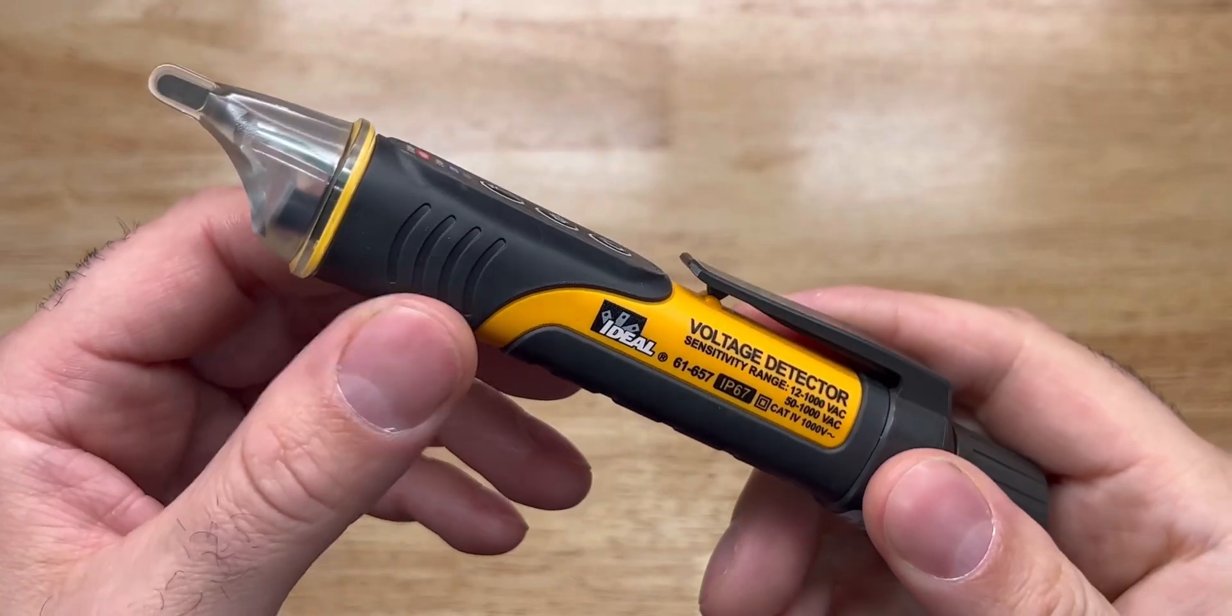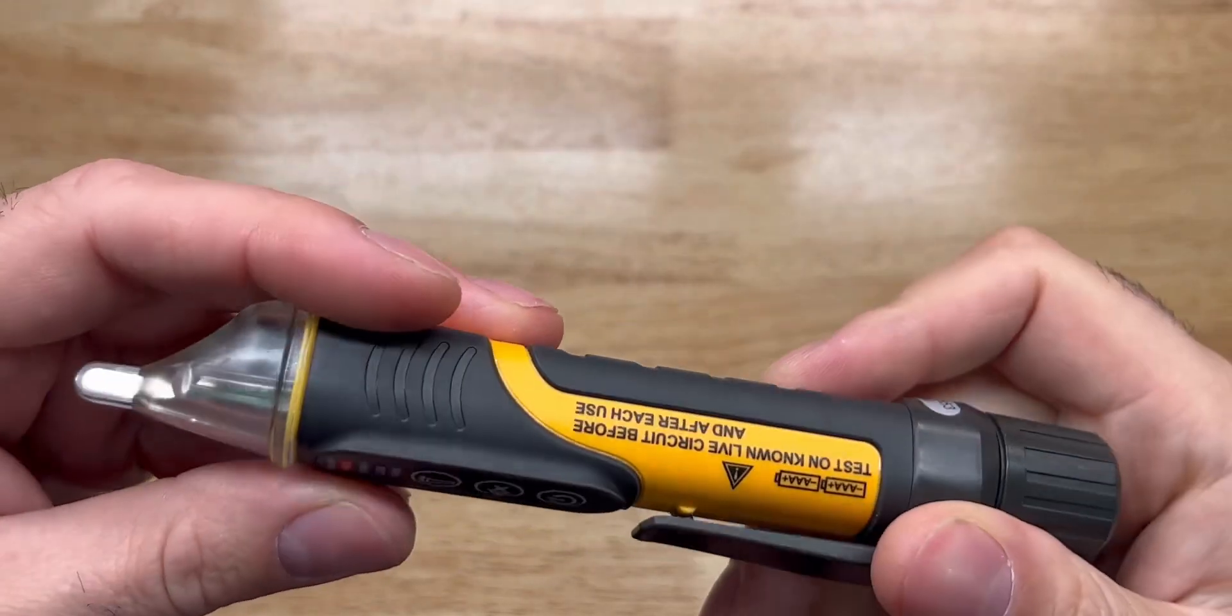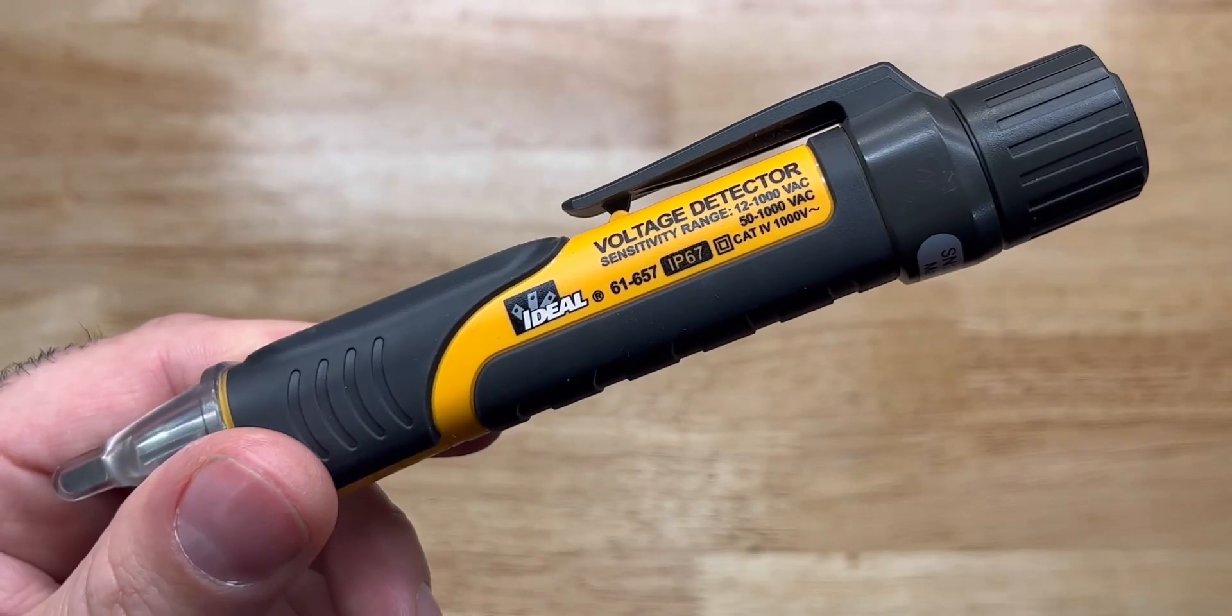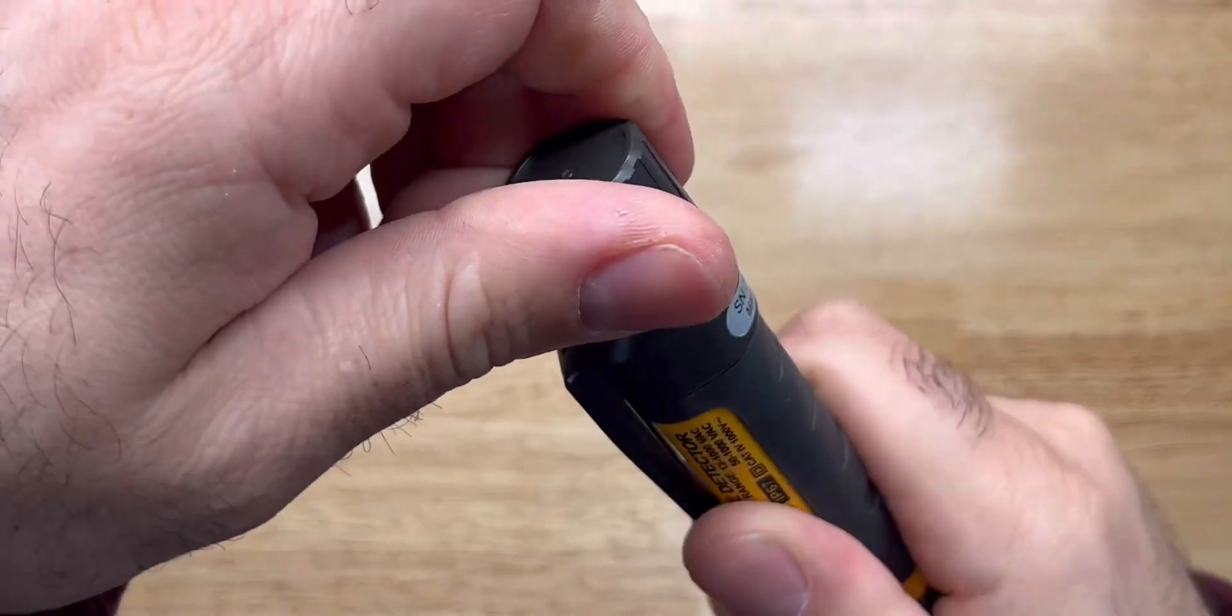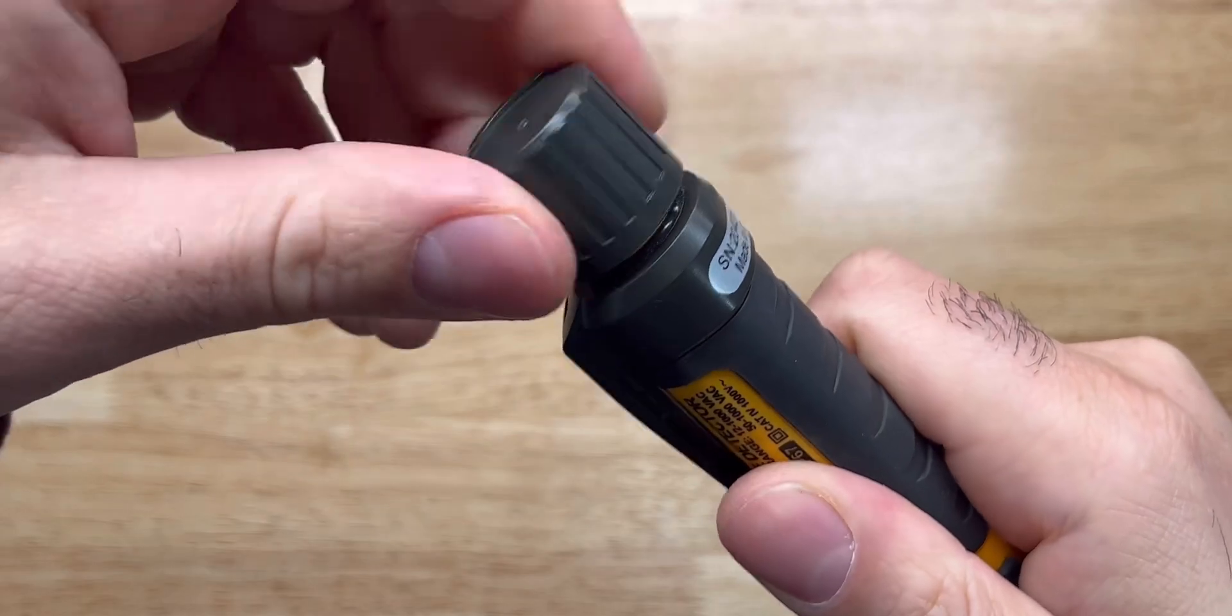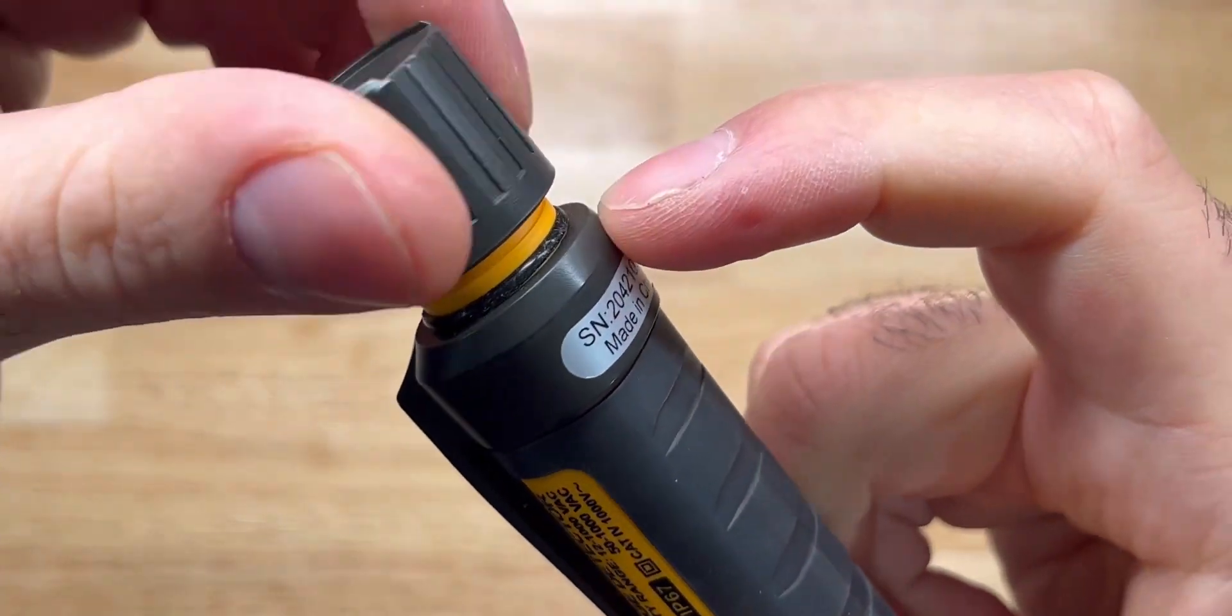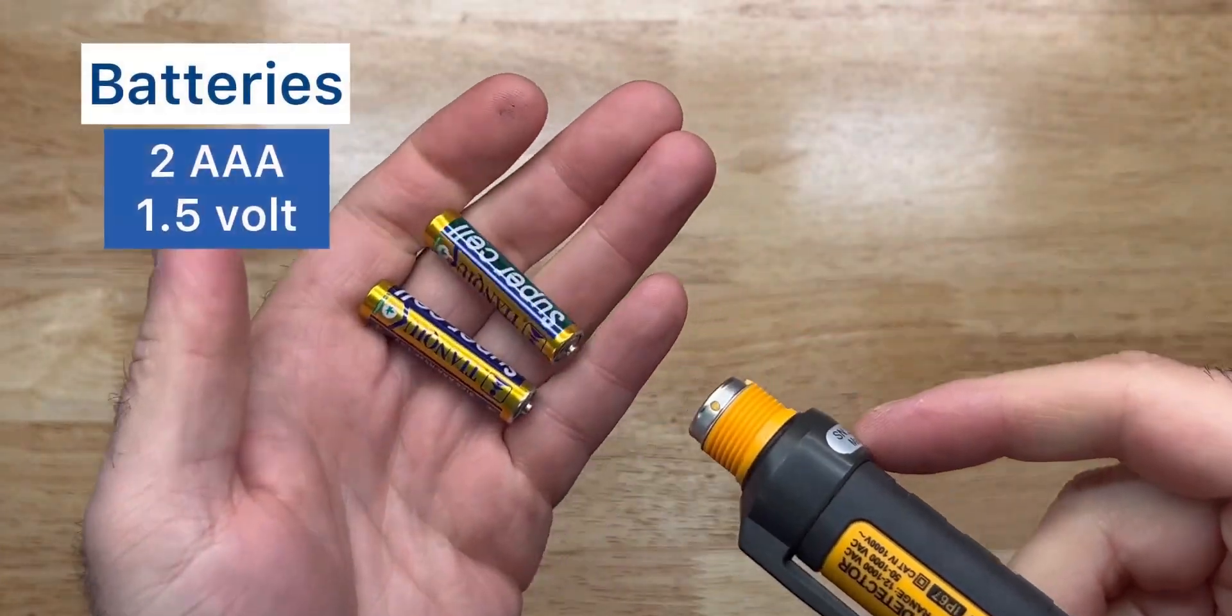It has an industrial over folded grip, the lanyard tie-off point. Speaking of that IP67, they do have a seal here just so water won't get into the battery compartment. And just in case you're wondering, they even threw in the batteries.